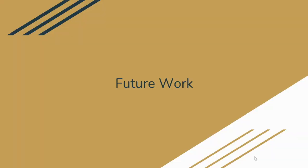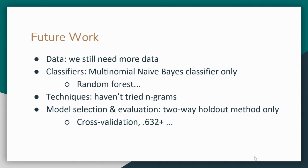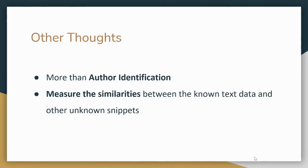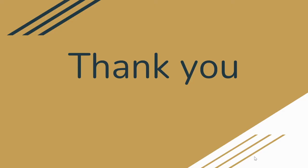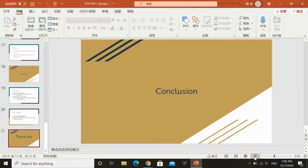In the future, we will collect more data to have better generalization performance. We can also use other classifiers like random forests, and other techniques like n-grams. Evaluation methods such as cross-validation will also be examined. If possible, we might also try to do more than author identification — trying to measure the similarities between known texts and other unknown texts. That's all for our presentation. Thank you everyone.